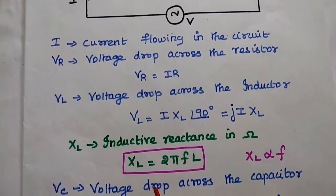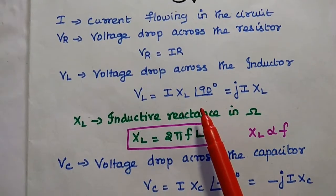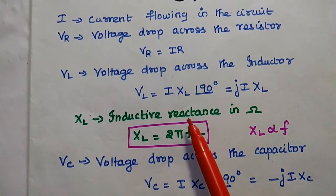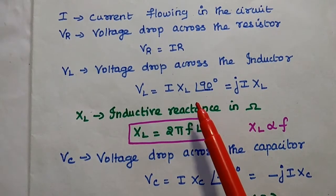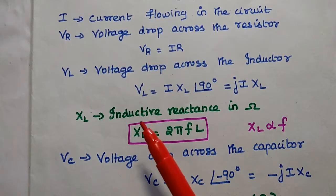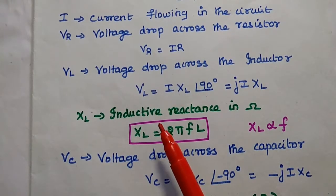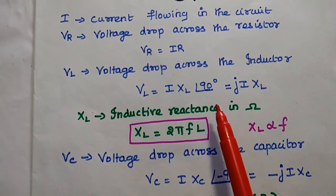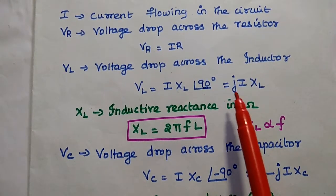The voltage drop across the inductor Vl is equal to I into XL with a phase of plus 90 degrees. XL is the inductive reactance. In the inductor, the current lags the voltage drop VL by 90 degrees — the current is lagging behind this inductor voltage. This inductor has positive reactance, so we can write plus J times I into XL.